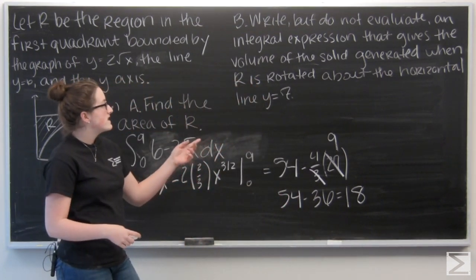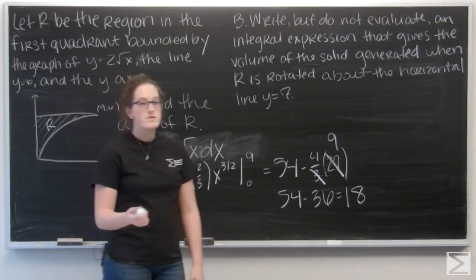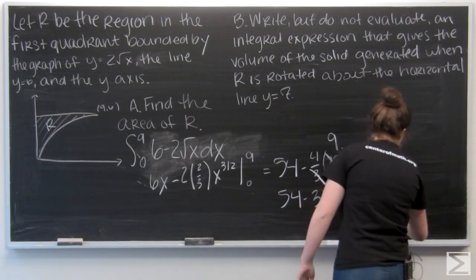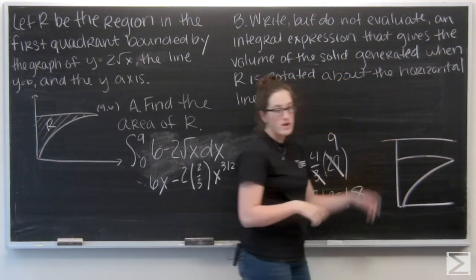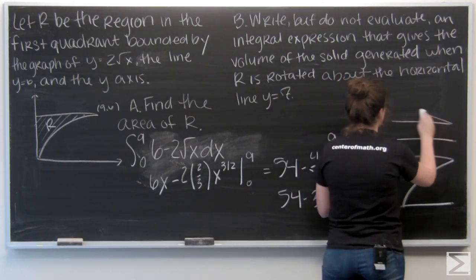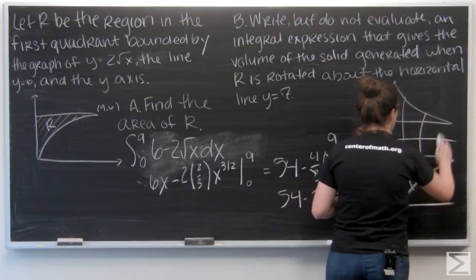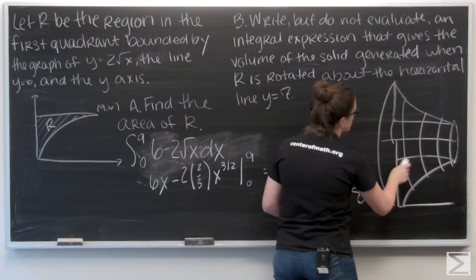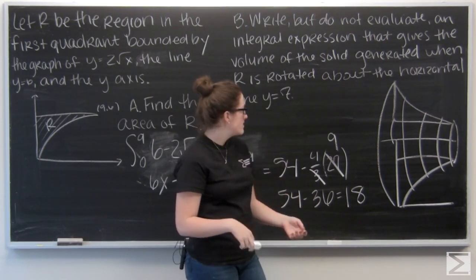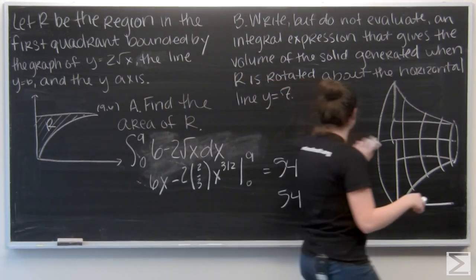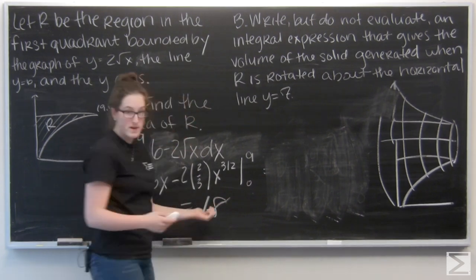B says write but do not evaluate an integral expression that gives the volume of the solid generated when R is rotated about the horizontal line Y equals 7. So let's try to draw a picture of that. Here's my region again. And there's the line Y equals 7. Y equals 6. Here's my region, just upside down. You can see I kind of have this volcano looking thing that has a cylinder cut out in the middle of radius 1.